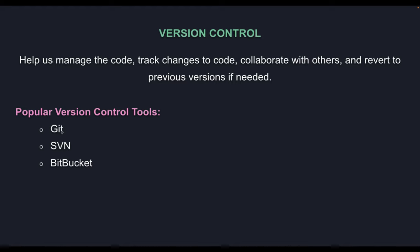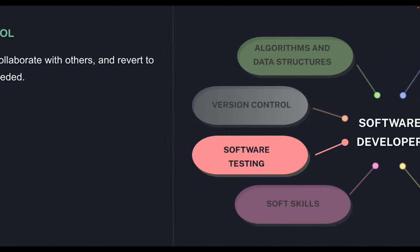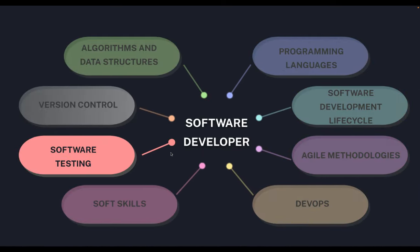Some popular version control tools you might already be aware of are Git, GitHub, and Bitbucket. Every cloud provider also has their own version control tools — AWS, Google, and others provide their own based on their ecosystem. Having solid knowledge of at least one version control tool in your portfolio is very valuable.